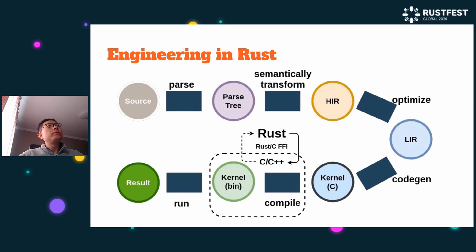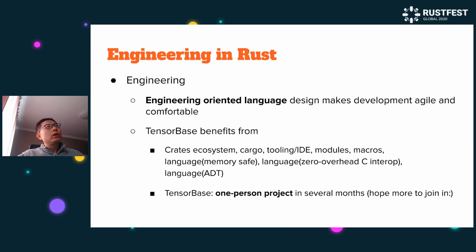Here is an architecture of TensorBase. It's like the compiler graph of language systems, like Rust's compiler. Because this event is a Rust festival, I will talk a bit more about Rust.